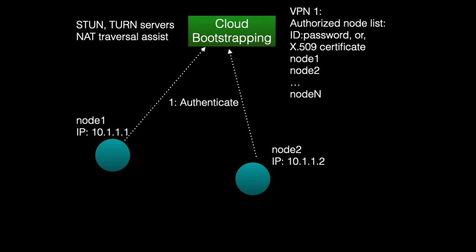Starting with a cloud bootstrapping node that has a list of all nodes authorized to join the VPN, you can authenticate using user IDs and passwords or X.509 certificates. The bootstrapping service also runs STUN and TURN servers that assist in the process of NAT traversal.